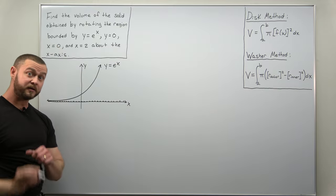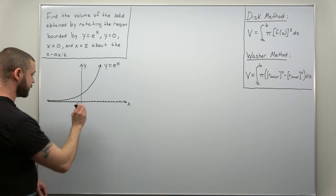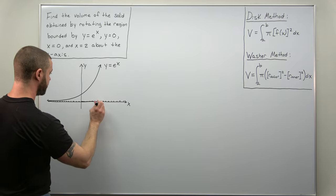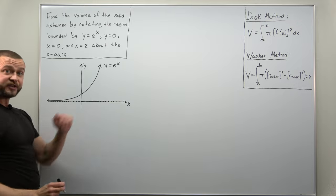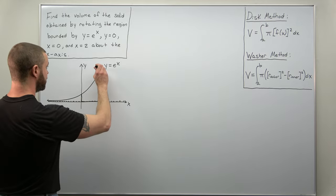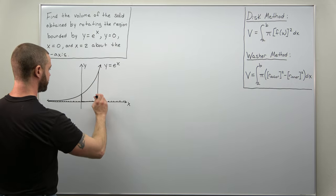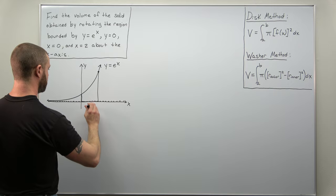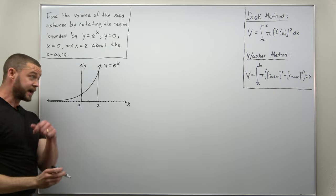So that's your graph of e to the x. We have the graph of y equals zero on the bottom here, so that's just the x-axis, and x equals zero and x equals two are vertical lines. So we get this region bounded on the left there by x equals zero and there on the right by x equals two.